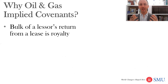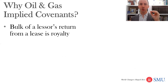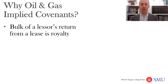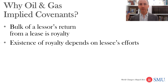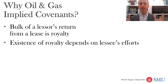So why do we have implied covenants in leases? One reason is that the main return a landowner gets from the oil and gas on their land — that they've leased — is through the royalty. They get a bonus, maybe delay rentals, shut-in royalty payments, but the real way they get paid is through that royalty, that share of production. And so the landowner has a strong interest in the oil and gas company trying to maximize that production.